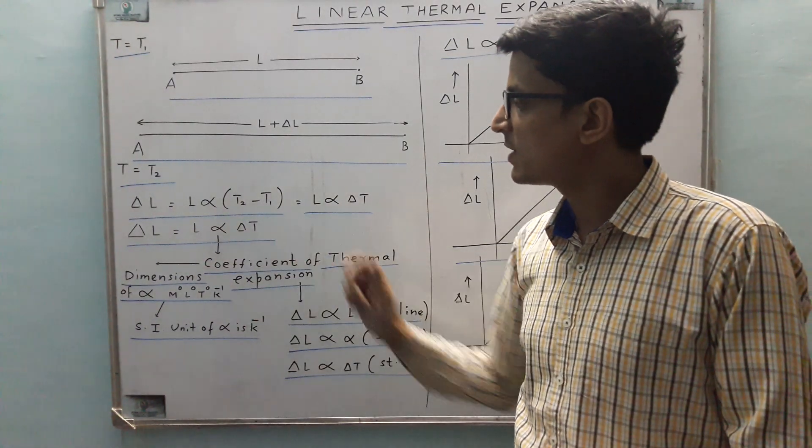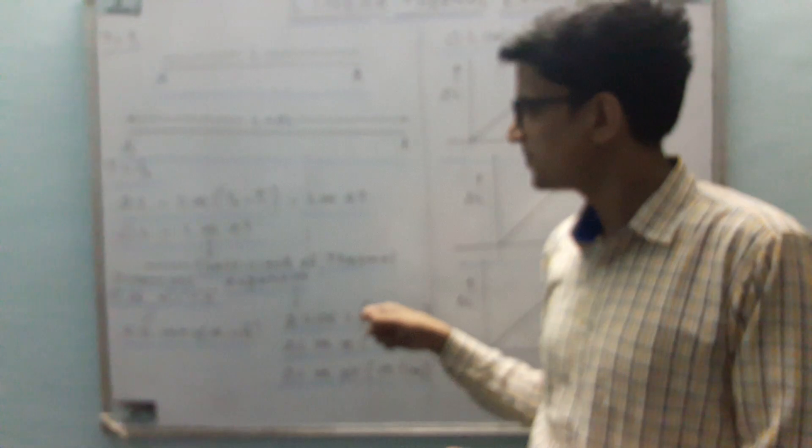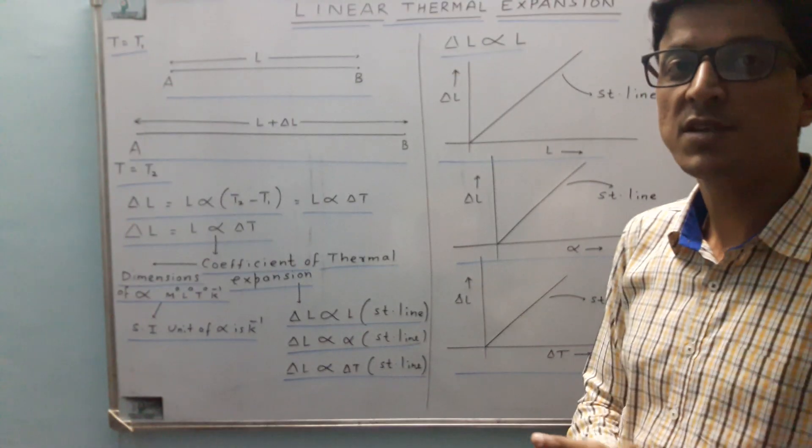So delta L is L alpha delta T, because alpha is called coefficient of thermal expansion. It has got dimensions M0, L0, T0, T minus 1. It has a unit as Kelvin minus 1.